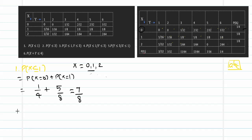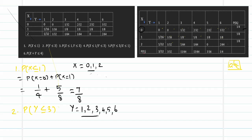Moving on to the second subdivision, P(Y ≤ 3). Y takes the values 1, 2, 3, 4, 5, and 6. The values less than or equal to 3 are 1, 2, and 3. So we write this as P(Y = 1) + P(Y = 2) + P(Y = 3).